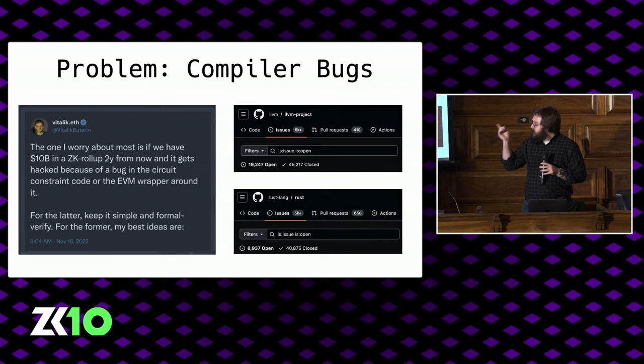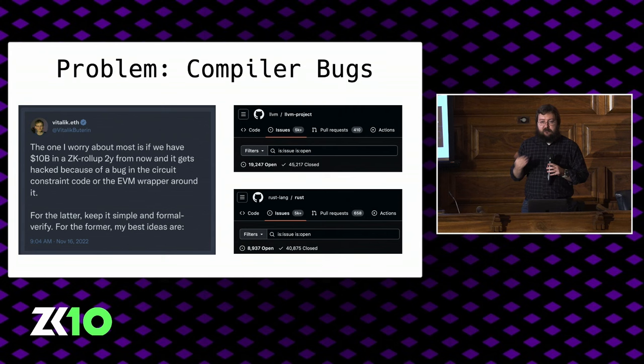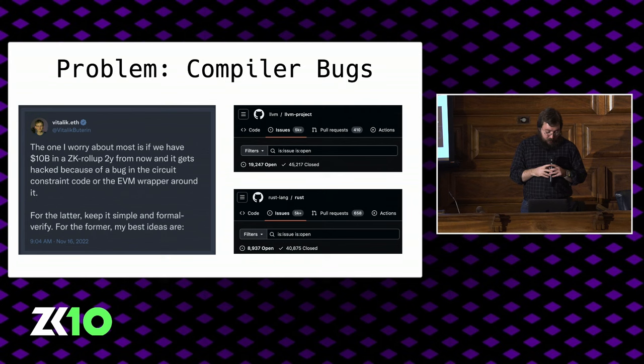As a compiler engineer that kind of excites me, but as someone working in zero-knowledge, it terrifies me. I really like this Vitalik tweet I think about a lot: one of the Achilles heels of zero-knowledge is that because of what we gain in terms of compression, we also lose a lot of information that makes it much easier for an adversary to exploit a bug — not just drain a single application, but potentially drain an entire platform. So what's the solution?